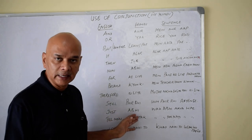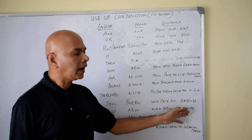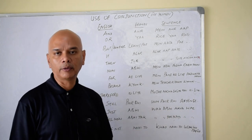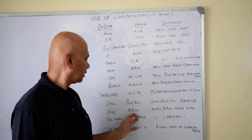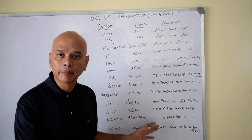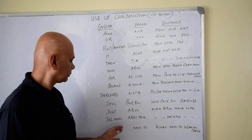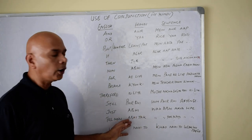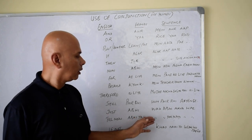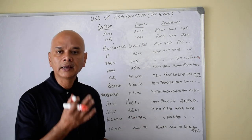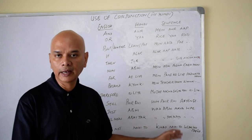'Just' or 'just now' is also expressed with 'abhi.' For example: Woh abhi aya hai — he has come just now. 'Till now' in Hindi is 'abhi tak.' For example: Woh abhi tak nahi aya hai — he has not come till now.